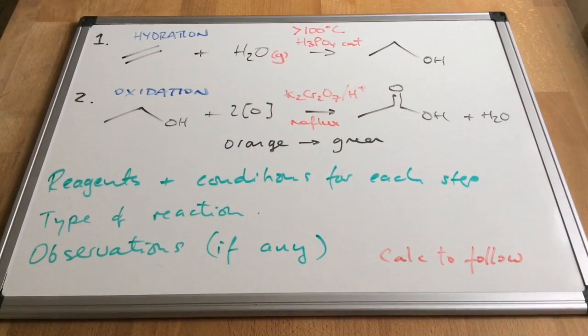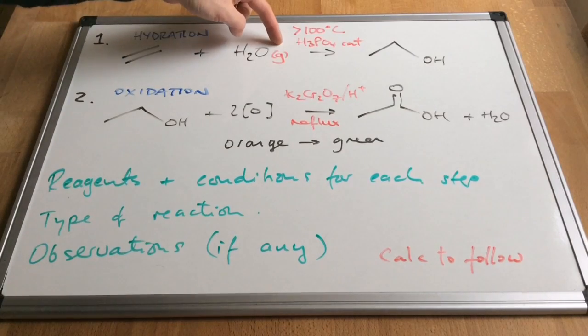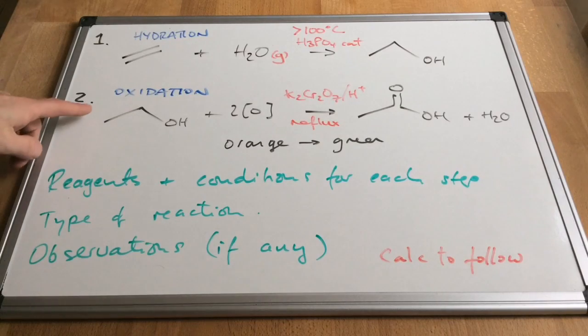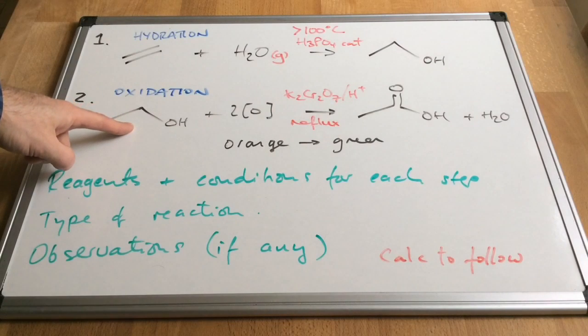So step one is an example of a hydration reaction. And the conditions for that reaction are that the water must be in its steam form. So you can see I've added a G state symbol next to the water. To get water into steam, the temperature must be over 100 degrees Celsius. And you also need a phosphoric acid catalyst.